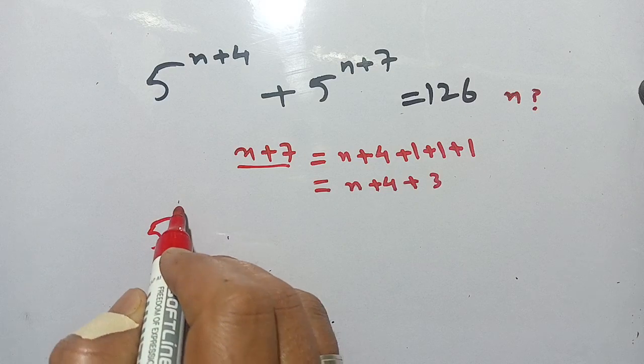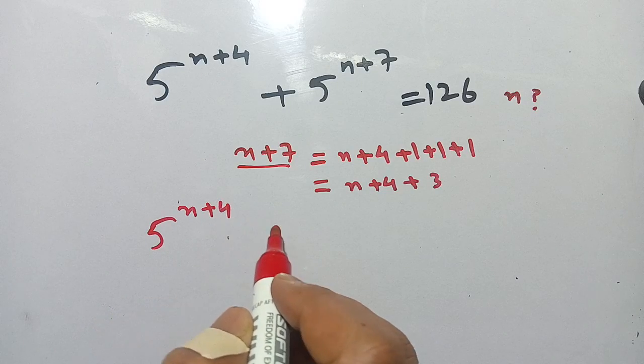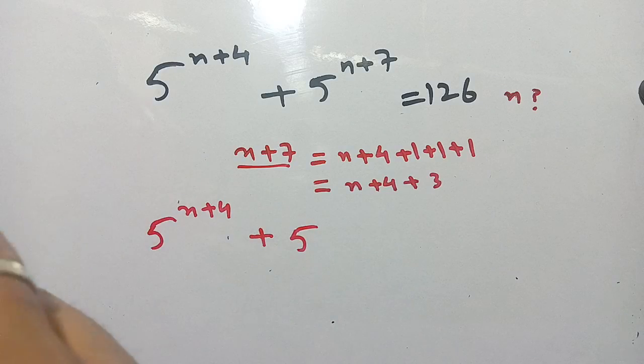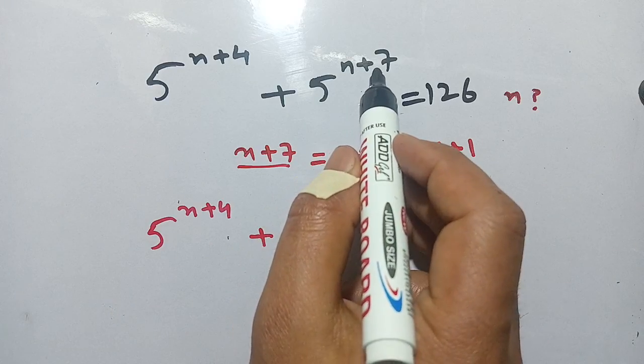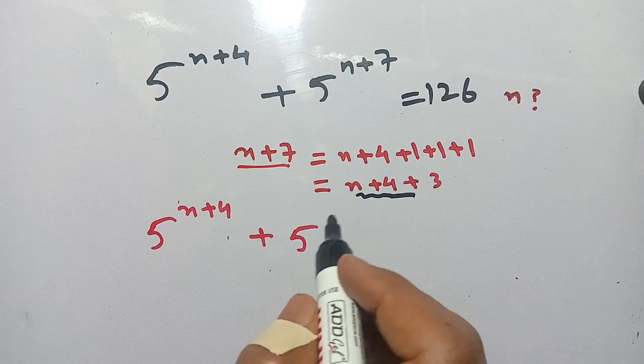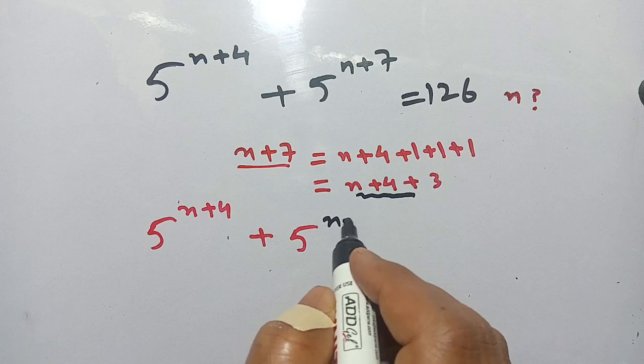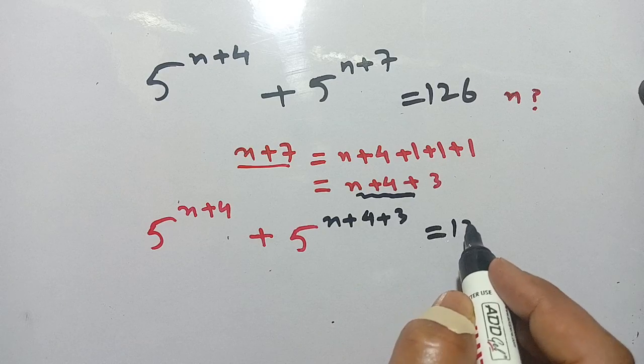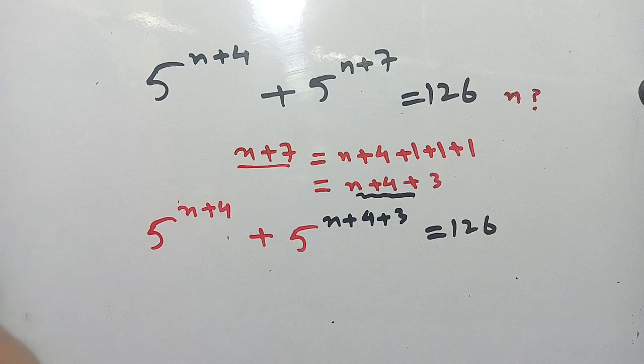5 power n plus 4 as it is, plus 5 power - in place of n plus 7 we put n plus 4 plus 3. Now we have n plus 4 plus 3 is equal to 126.